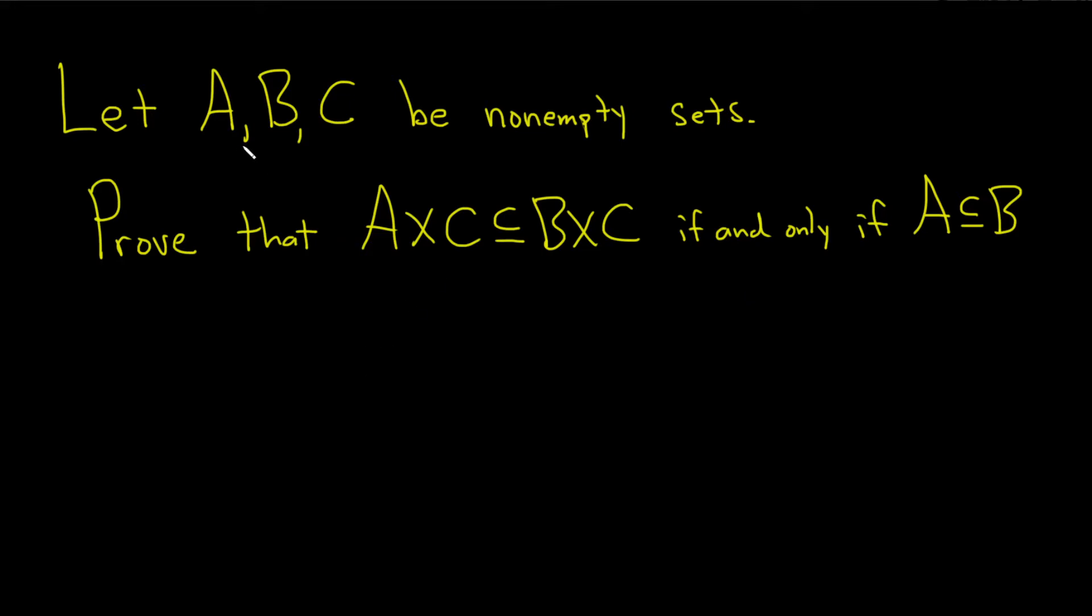Hello, in this video we have three sets A, B, and C and they're non-empty and we're going to prove that A cross C is a subset of B cross C if and only if A is a subset of B.